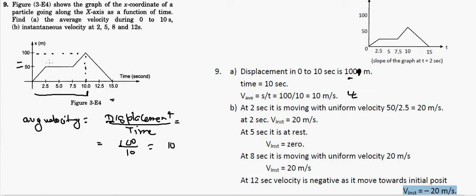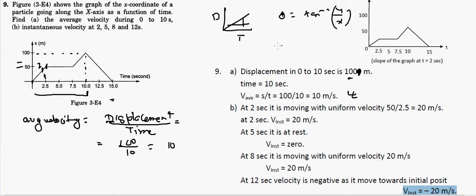For the instantaneous velocity at t = 2 seconds, from 0 to 2.5 seconds the slope remains the same since it's a straight line. On a distance versus time graph, the slope — tan θ — equals the change in displacement over change in time, which gives velocity. Since it's a straight line, the inclination is the same everywhere, so the slope at t = 2 equals the slope at t = 2.5.